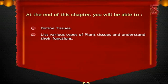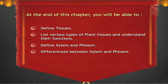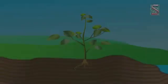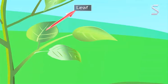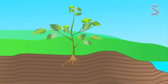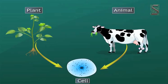You will define xylem and phloem and differentiate between xylem and phloem. The various parts of the plant — like the leaf, root, and stem — are all organs of plants. Like animal tissues, these are also made of tiny units of cells.